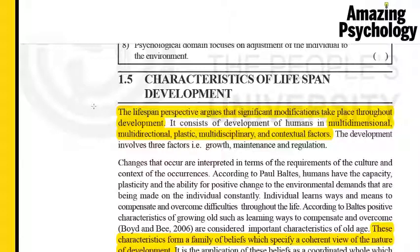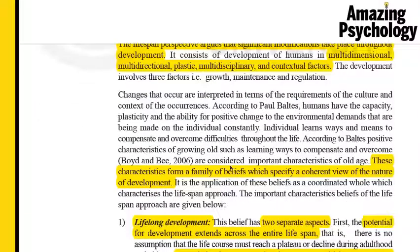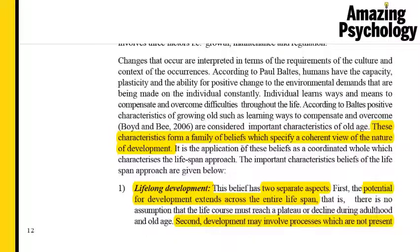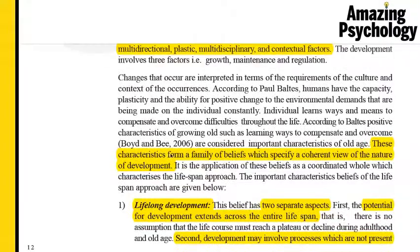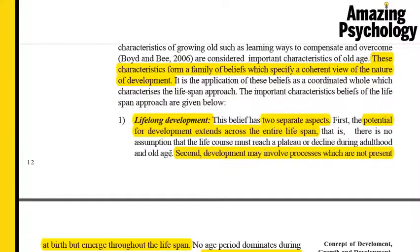So let's look at some of them: one is multi-dimensional, another is multi-directional, there's plasticity, multi-disciplinary, and contextual. These words may seem confusing right now but will be easy to understand once we finish. These characteristics form a family of beliefs which specify a coherent view of the nature of development — together they give a very comprehensive picture of how development happens.